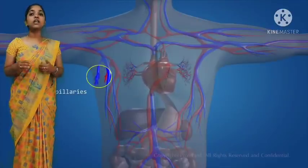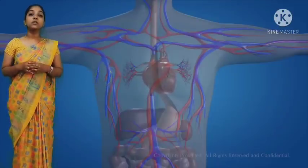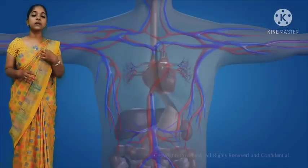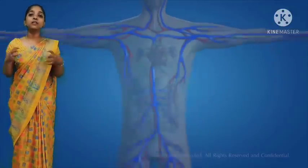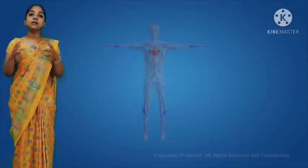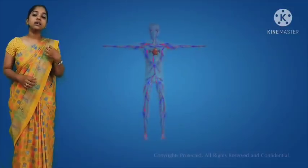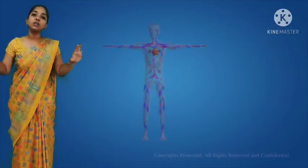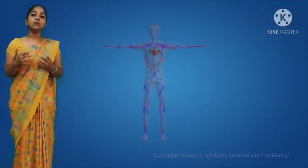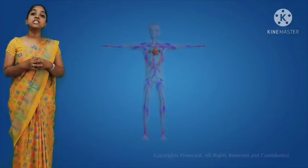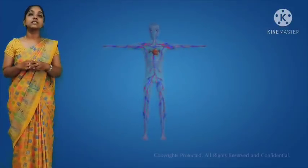Blood vessels are thin tubes which start from the heart and are spread through the entire body, forming a network. From the heart, the blood vessels spread throughout the body. There are three types of blood vessels: arteries, veins, and capillaries.